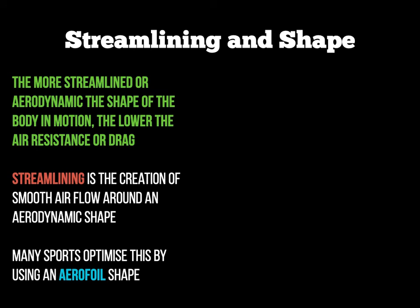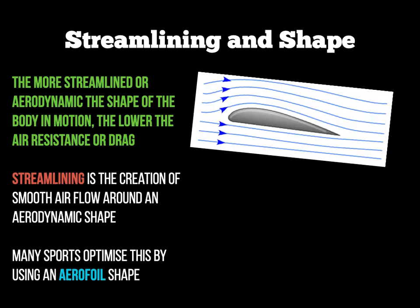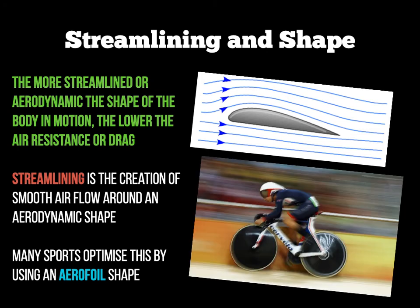We often discuss aerodynamic shapes, and the key one is the aerofoil shape — visible on screen. This shape is designed to reduce air resistance and increase speed through air, which you'll encounter later through the Bernoulli principle. It's commonly seen on a cyclist's helmet — the classic aerofoil shape minimises air resistance and drag for the cyclist, helping them accelerate faster through a race.